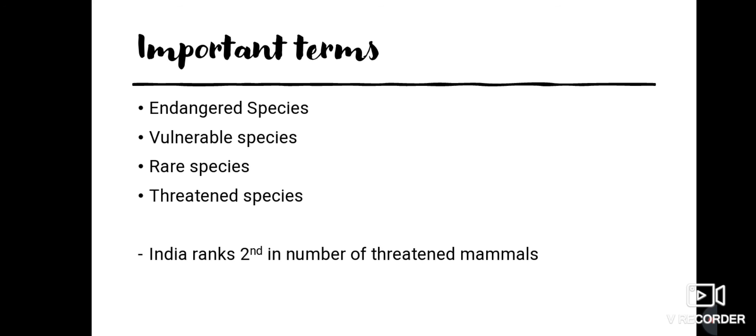Through the IUCN Red List, species are classified into four categories: endangered, vulnerable, rare, and threatened. Endangered species, denoted by 'E,' are those near to extinction whose populations are at critical levels and require protection. Vulnerable species, denoted by 'V,' includes species whose populations have been seriously depleted and whose ultimate security is not assured, or populations that are still abundant but under serious threat.